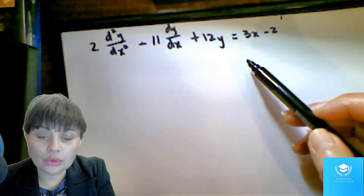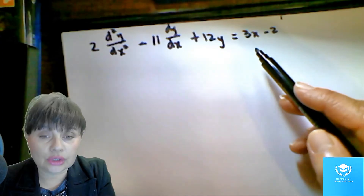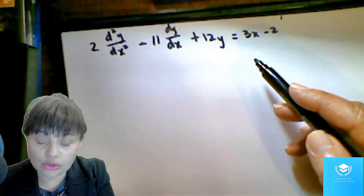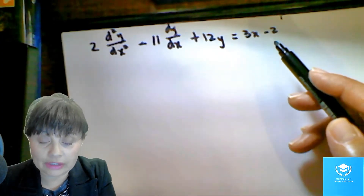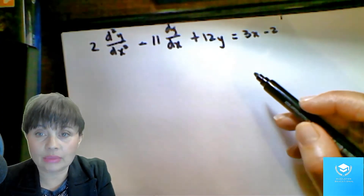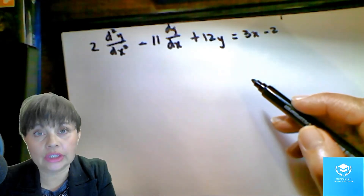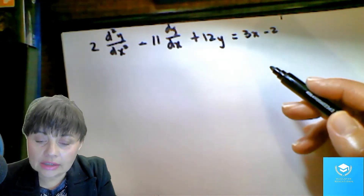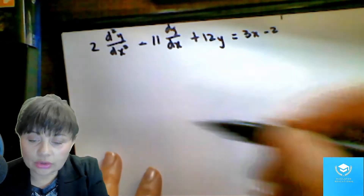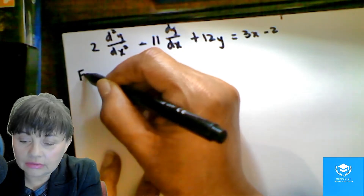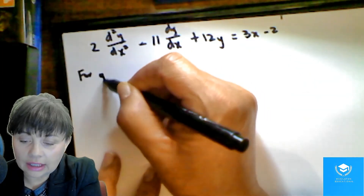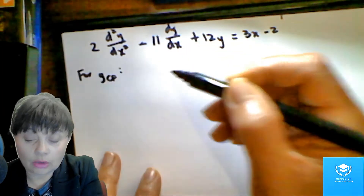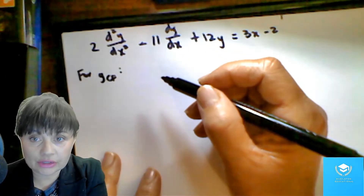You have a solution which is made up of two parts. The first part is your complementary function and the second part is your particular integral. So let's have a look at finding our complementary function.